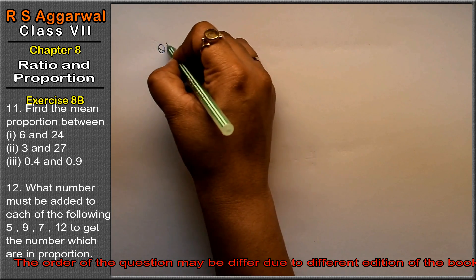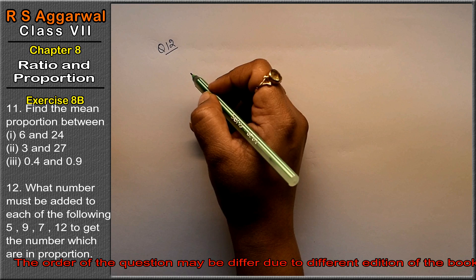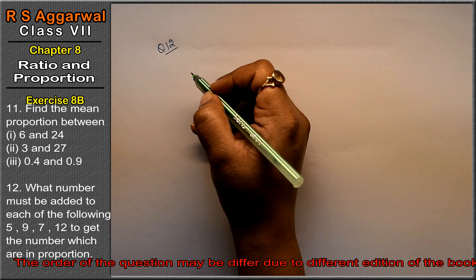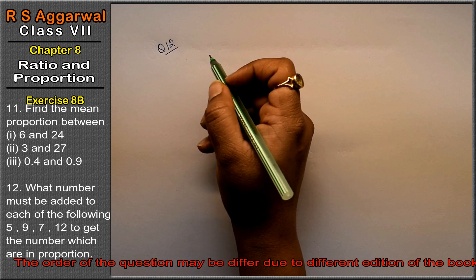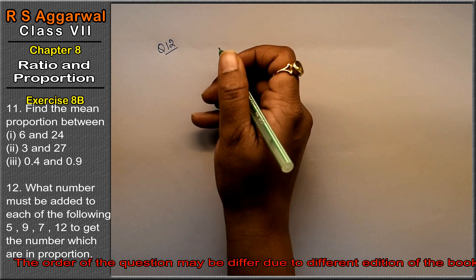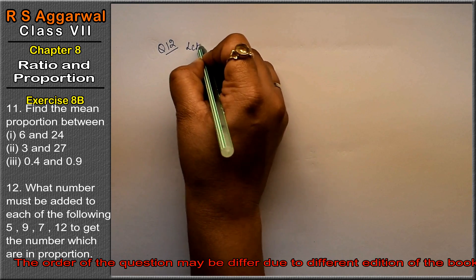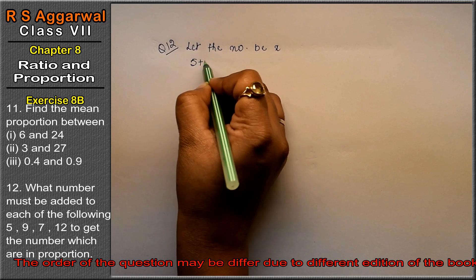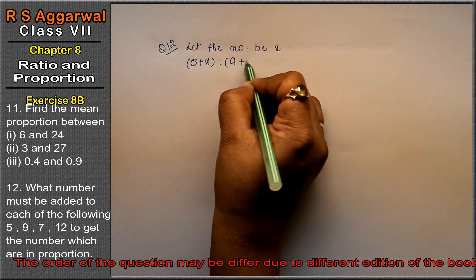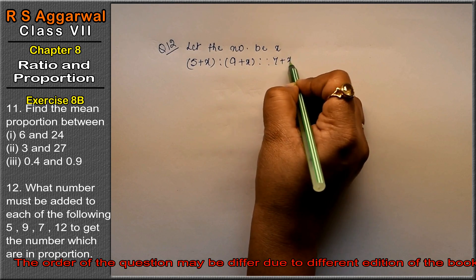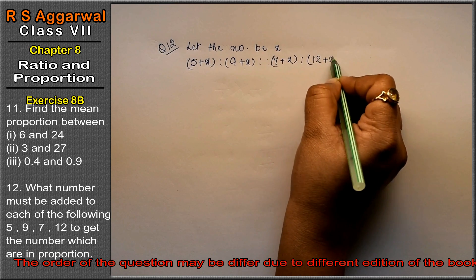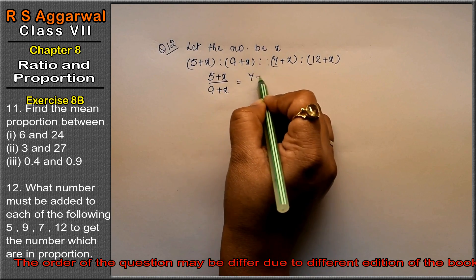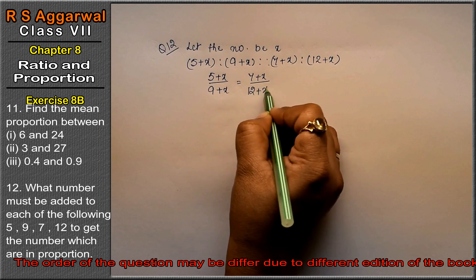Let's do question number 12 of exercise 8b, that is ratio and proportion. Question number 12 is: what number must be added to each of the numbers 5, 9, 7, and 12 to get numbers which are in proportion? Let the number to be added be x. So we get 5 plus x is to 9 plus x is to 7 plus x is to 12 plus x. This gives us 5 plus x upon 9 plus x equals 7 plus x upon 12 plus x.